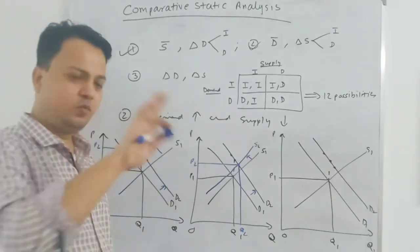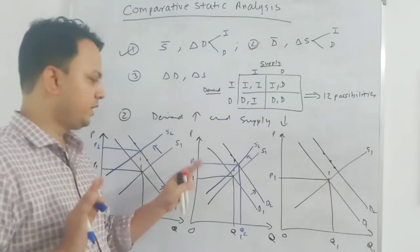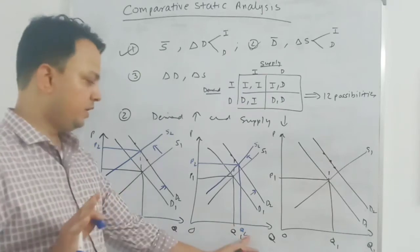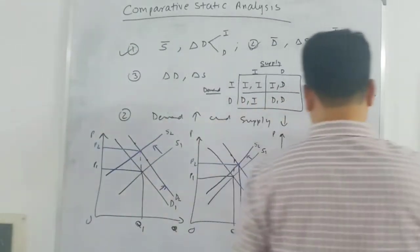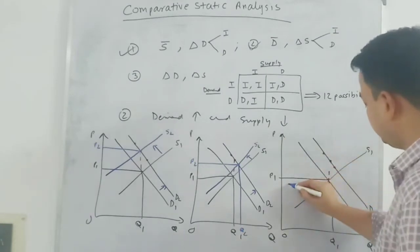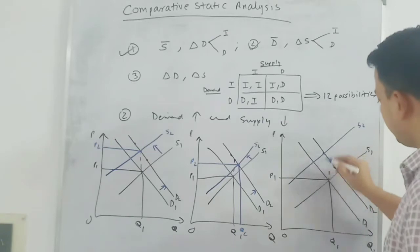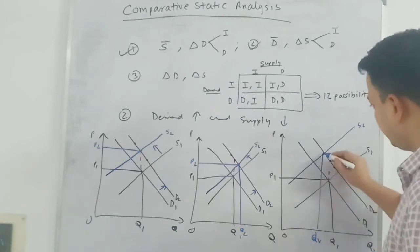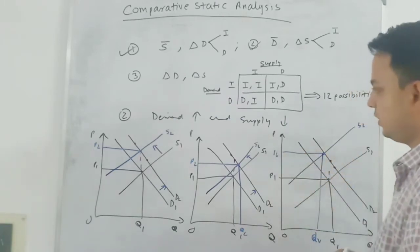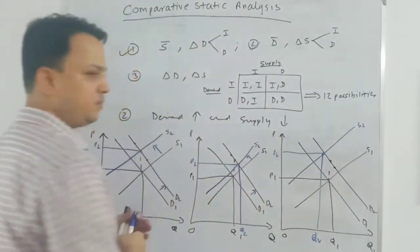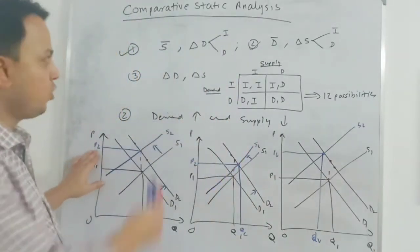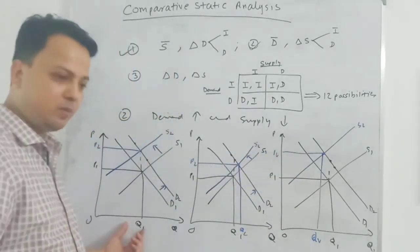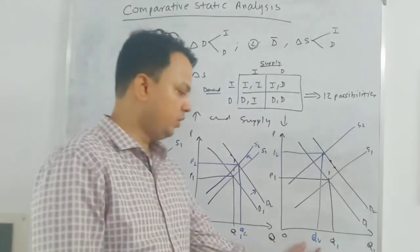The demand curve shifts rightward and the supply curve shifts leftward. At the new equilibrium, quantity is higher and price is higher. The conclusion is that price will be higher. Magnitude does not matter right now. We need to understand that price will be higher. At the new equilibrium, quantity can be the same, it can be higher, or it can be lower.